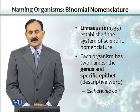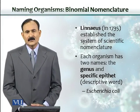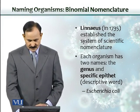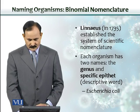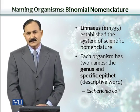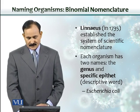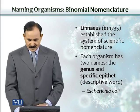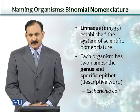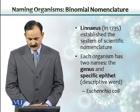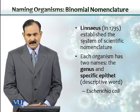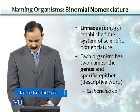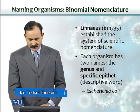In this part of the talk, we will talk about how we name the microorganisms. The system was developed by Linnaeus in 1735 and is called binomial nomenclature, where the organism has two names: the genus and a specific epithet. Epithet means a descriptive word, like Escherichia coli.